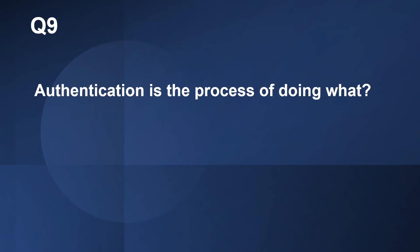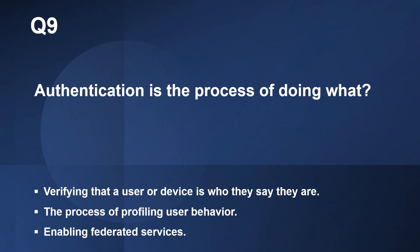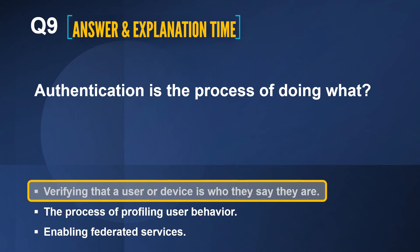Question number nine: Authentication is the process of doing what? The correct answer is verifying that a user or device is who they say they are. Authentication is the process of verifying that a user or device is who they say they are.